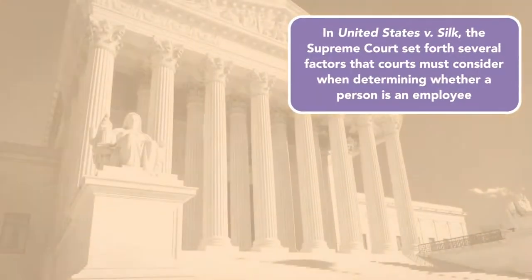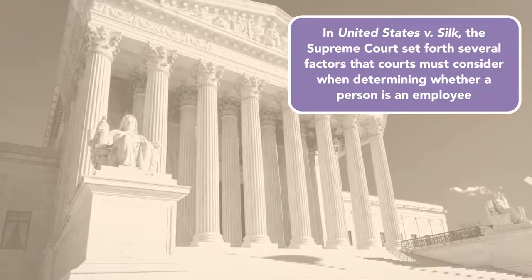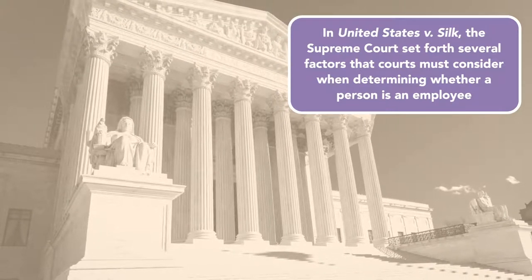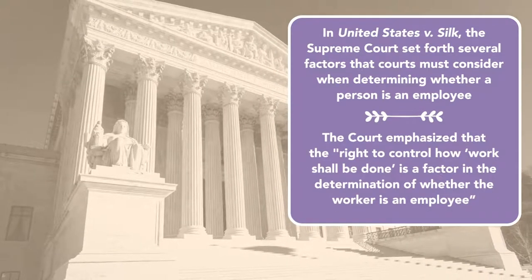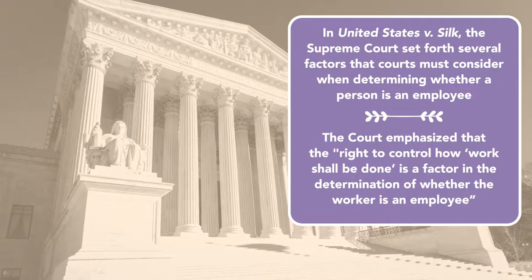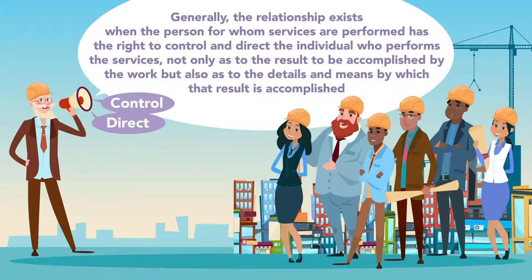In United States v. Silk, the Supreme Court set forth several factors courts must consider when determining whether a person is an employee. The court emphasized that the right to control how work shall be done is a key factor. The court stated that generally the relationship exists when the person for whom services are performed has the right to control and direct the individual who performs the services, not only as to the result to be accomplished by the work, but also as to the details and means by which that result is accomplished.